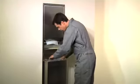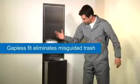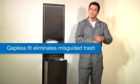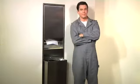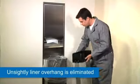Next, the custodian lowers the liner mate into the receptacle for a gapless fit, eliminating not only the unsightly overhang, but also misdirected trash falling into the receptacle behind the liner. With liner mate, there is no unsightly overhang on the outside of the receptacle.